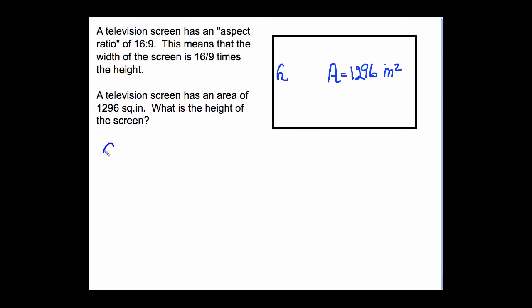So we're going to guess, let's say, 10 inches. Now, if the height is 10 inches, the height is 10 inches, it says here that the width is going to be 16 ninths times the height. So we'll take 16 ninths times the height, which is 10 inches. And then the area is going to be the product of those two. So 10 times 16 ninths times 10 is going to be the area of 1296 square inches. And you will find that this is not correct. That 10 times 10 times 16 ninths is not 1296.